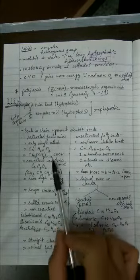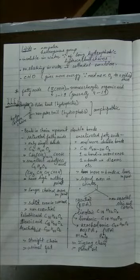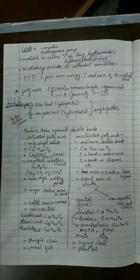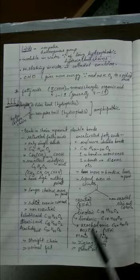Now, the more the number of carbons attached - that means the longer the hydrocarbon chain is - higher will be the melting point of saturated fatty acid. And in the case of the unsaturated fatty acid, more the number of double bonds, lesser will be the melting point.